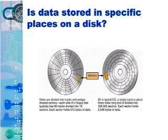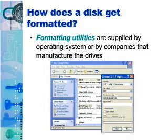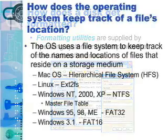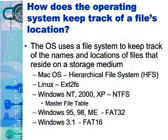Today, most floppy, zip, and hard disks are pre-formatted at the factory. However, computer operating systems provide formatting utilities you can use to reformat some storage devices. The operating system uses a file system to keep track of the names and locations of files that reside on the storage medium, such as a hard disk. Most versions of macOS use the Macintosh Hierarchical File System, or HFS.